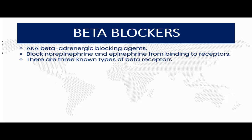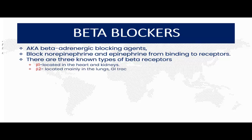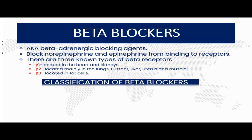We have three types of beta receptors. The beta-1 receptors are located in the heart and the kidneys. The beta-2 receptors are located mainly in the lungs, the gastrointestinal tracts, the liver, uterus, and the muscles — both the smooth muscle and the skeletal muscles. And lastly, the beta-3 adrenergic receptors are found in the fat cells.